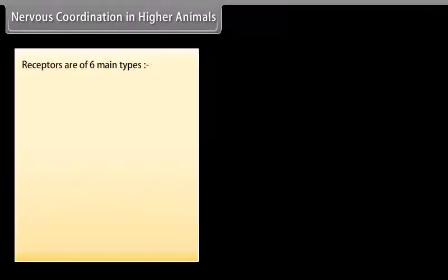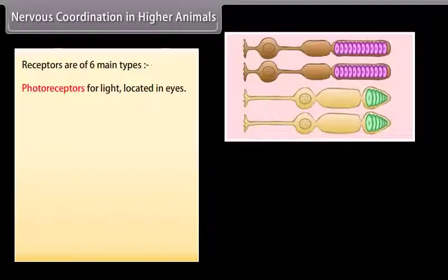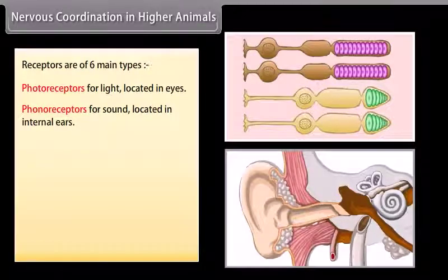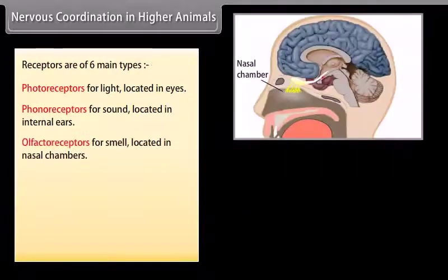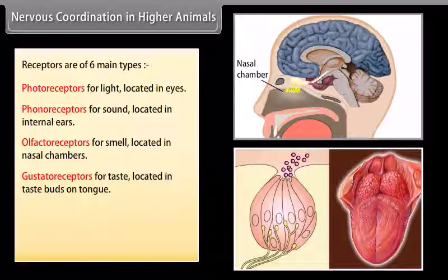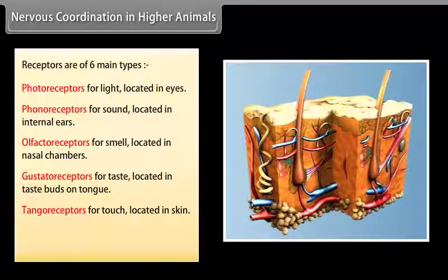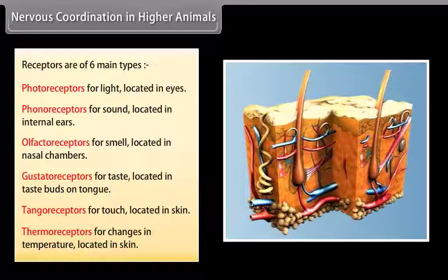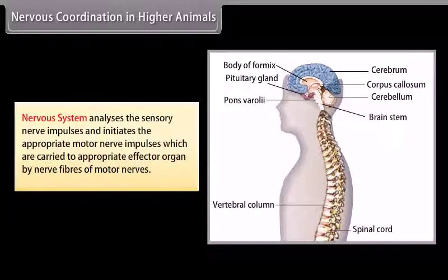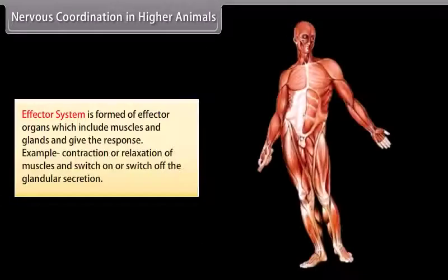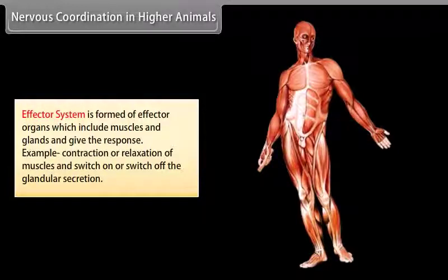Receptors are of six main types: photoreceptors for light, located in eyes; phonoreceptors for sound, located in internal ears; olfactory receptors for smell, located in nasal chambers; gustatory receptors for taste, located in taste buds on the tongue; tangoreceptors for touch, located in skin; and thermoreceptors for changes in temperature, located in skin. The nervous system analyzes the sensory nerve impulses and initiates appropriate motor nerve impulses, which are carried to the effector organ by motor nerves. The effector system is formed of effector organs including muscles and glands, and gives the response through contraction or relaxation of muscles and switching on or off of glandular secretion.